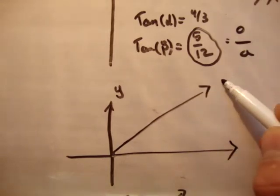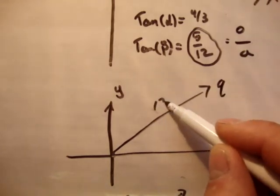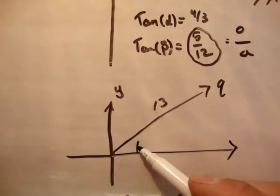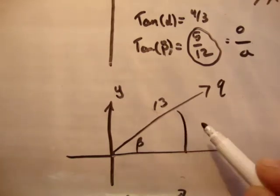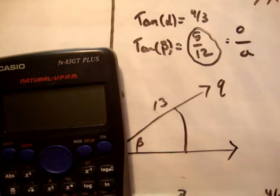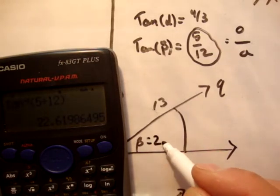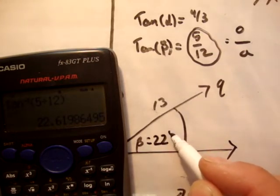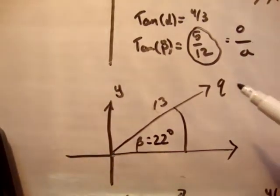We're going to call this the vector Q of magnitude 13 units at an angle beta. Now we know that tan(β) is equal to 5 over 12. So therefore beta is equal to inverse tan 5 over 12. Shift tan 5 divided by 12 gives you beta at an angle of 22 degrees.